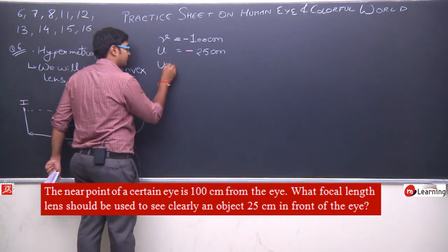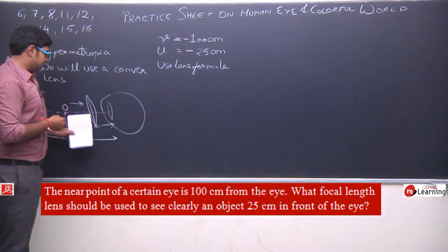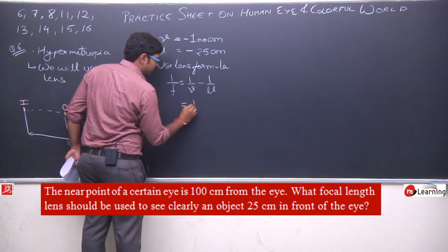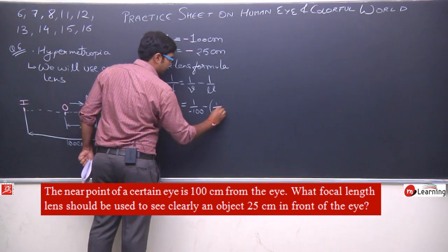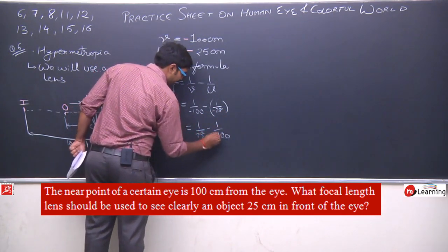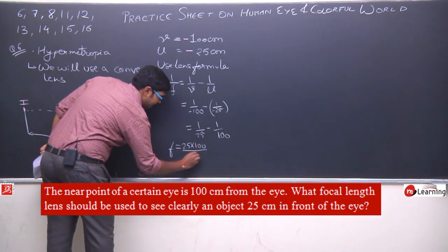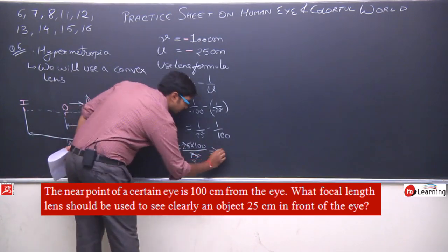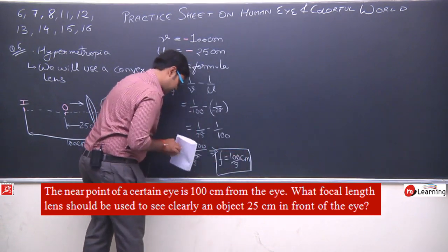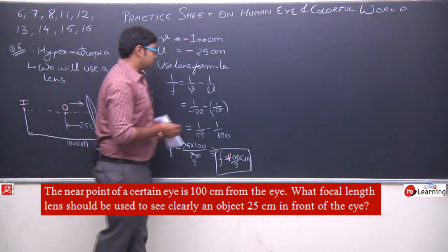Now I will use the lens formula to calculate the focal length of this lens. Lens formula: 1/f = 1/v − 1/u. So 1/f = 1/(−100) − 1/(−25), which gives 1/25 − 1/100. Solving this we get f = 25×100/75 = 100/3 centimetres with a positive sign. This is a positive value because a convex lens is being used. This is question number 6.